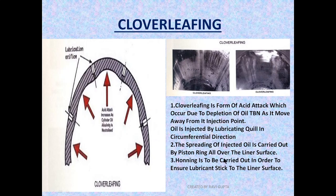The spreading of the oil is carried out by piston rings all over the liner surface. Now, to overcome cloverleafing, we have to make sure that proper honing of the liner wall is carried out so that loop oil retention can be re-established. As you can see in the diagram, this is the cloverleafing pattern at the injection point — as oil gets depleted, acid attack increases, which causes corrosion.